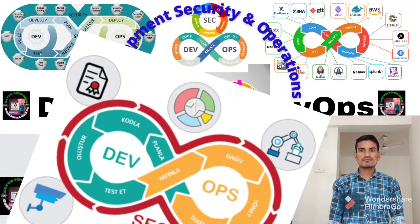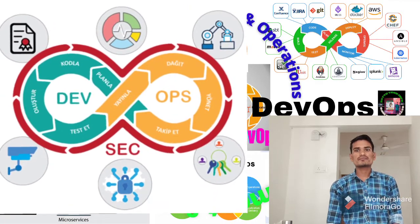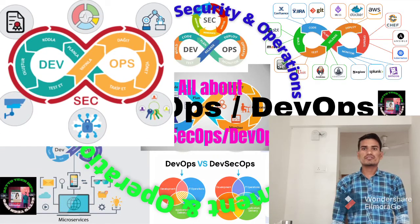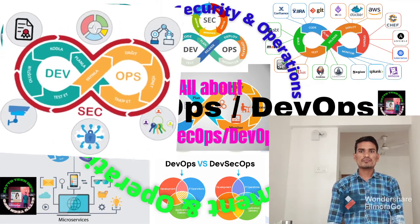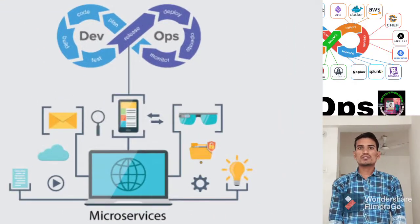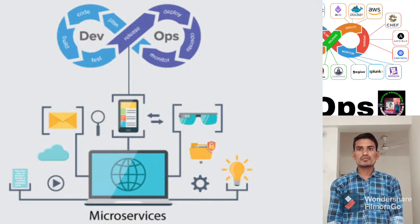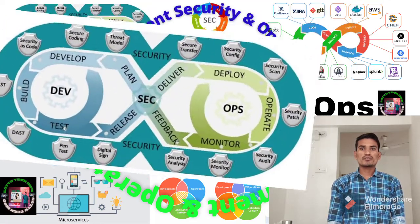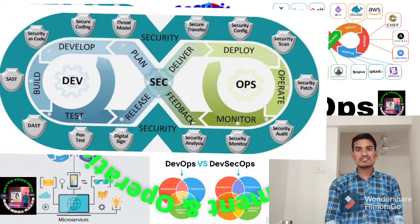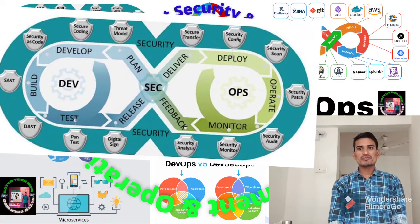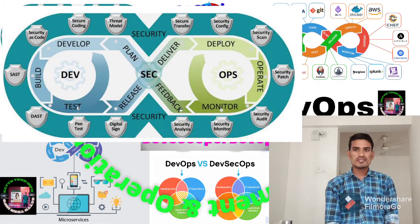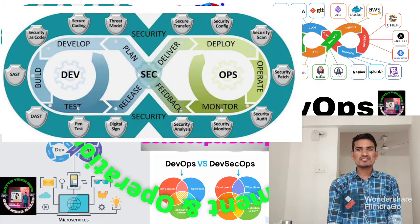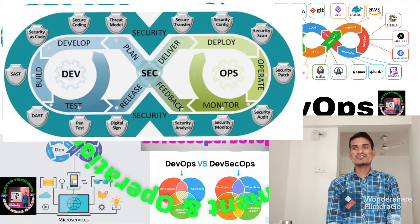DevSecOps is the advanced version of DevOps methodology. DevSecOps stands for Development, Security and Operations. Its mantra is to make everyone accountable for security, with the objective of implementing security decisions and actions at the same scale and speed as development and operations decisions and actions.